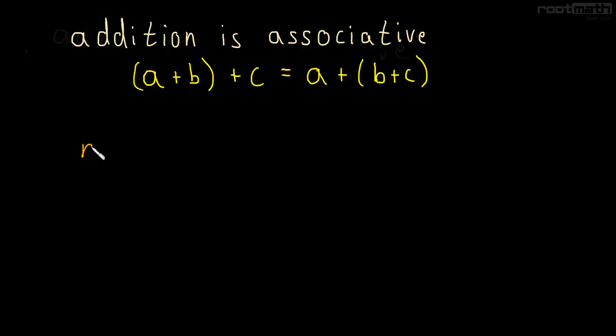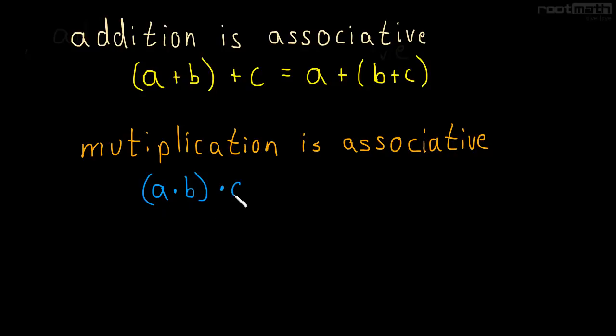Multiplication is the same. Multiplication is associative. So we write that as A times B, as a group, times C, is equal to A times the group B times C. So it's the same thing, and let's see an example of this.